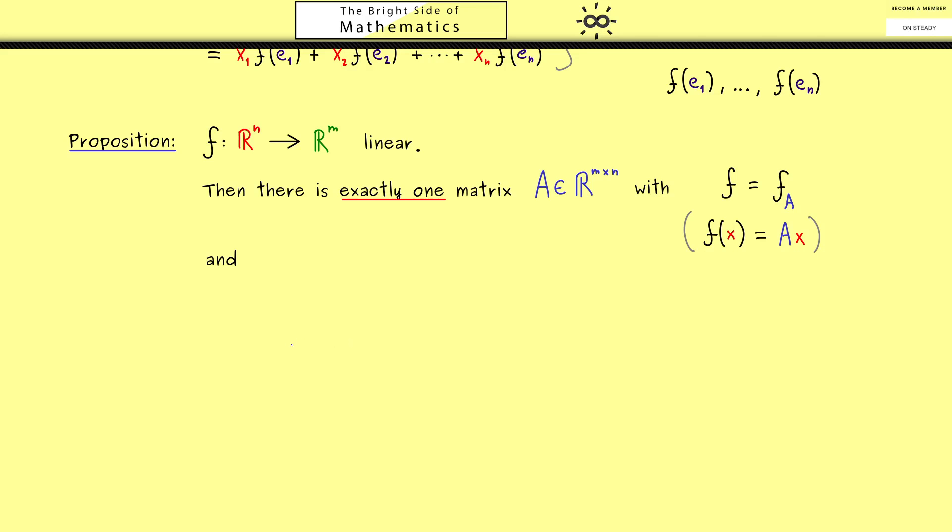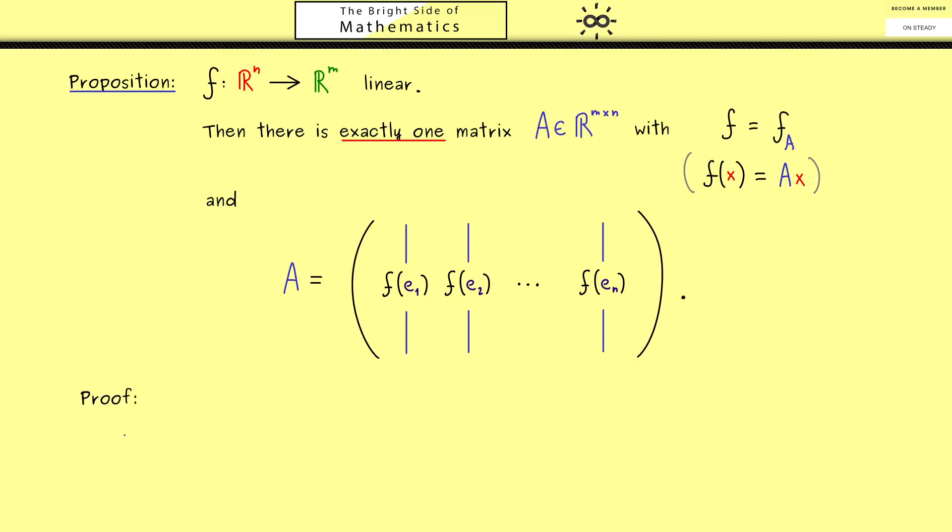And indeed it's not hard at all to tell you how this matrix A should look like. So you can simply remember in the columns of this matrix A we find the images of the canonical unit vectors. This means the first column here is just f of e1. And then not surprising at all the second column is f of e2. Hence you can fill in all the columns until the last one f of en. Okay with this we have the whole proposition here which tells us how an abstract linear map can be translated into a table of numbers. So you see it's the converse of the statement we explained in the last video. And of course in this video here we can now prove this nice fact here.